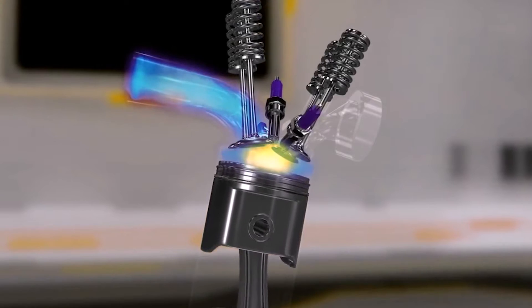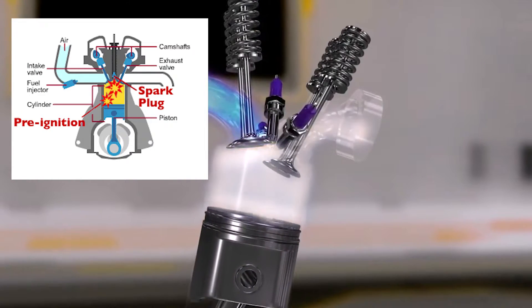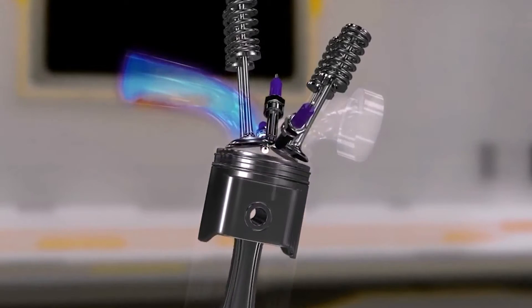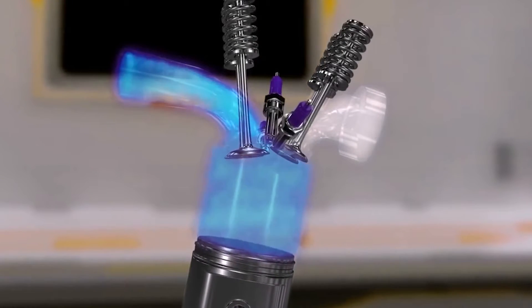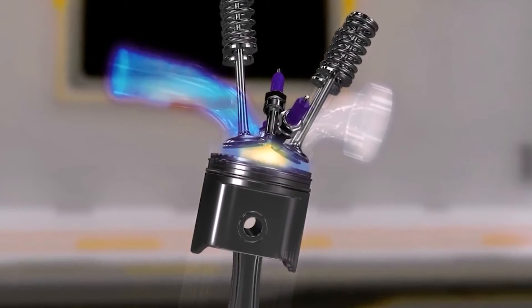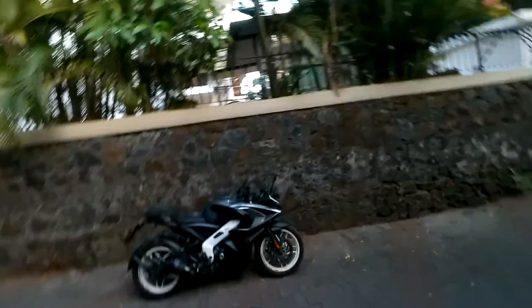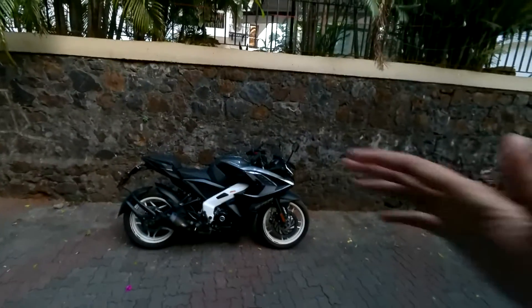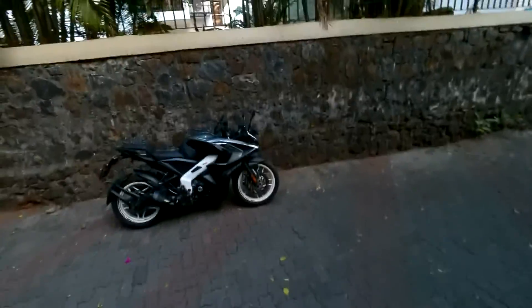If you have low octane fuel, the explosion happens before the piston hits the top. What high octane fuel does is resist the compression all the way until the engine actually needs it to explode - that's basically the function of high octane fuel. Engines like the Duke 390, Dominar 400, and the S1000RR are very high compression ratio engines, so they need that high octane fuel.